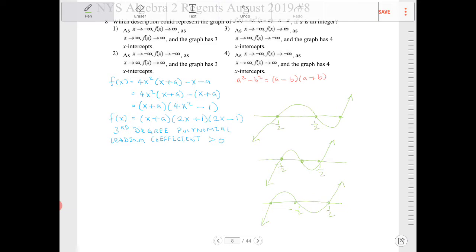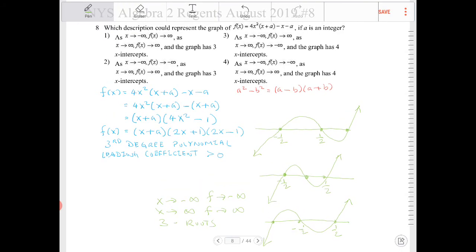All right, so because of that, let's see which description best matches this. So from negative infinity, when x approaches negative infinity, f will approach negative infinity. When x approaches positive infinity, f will approach positive infinity. And there are three roots. That looks like it will be option 2.